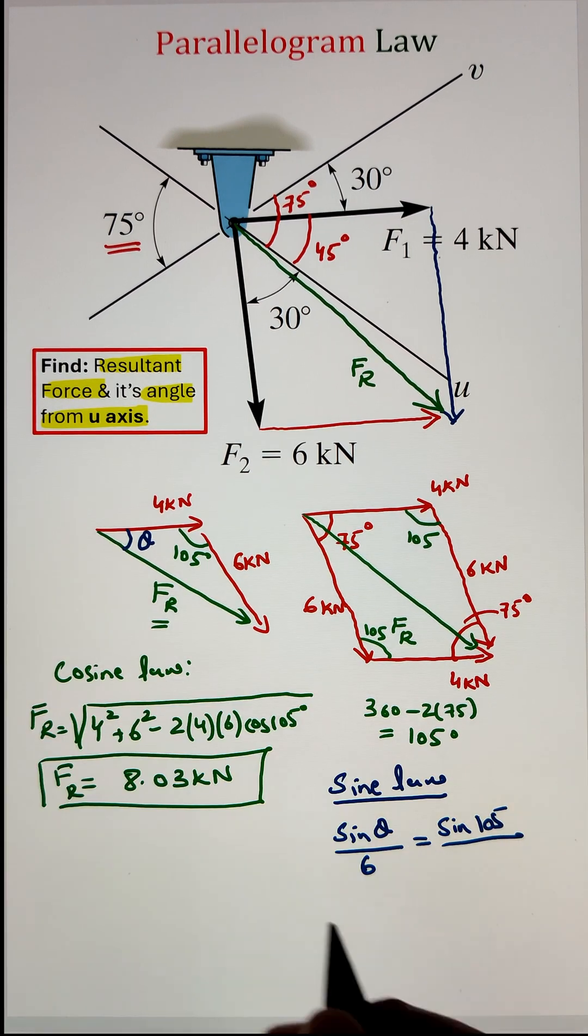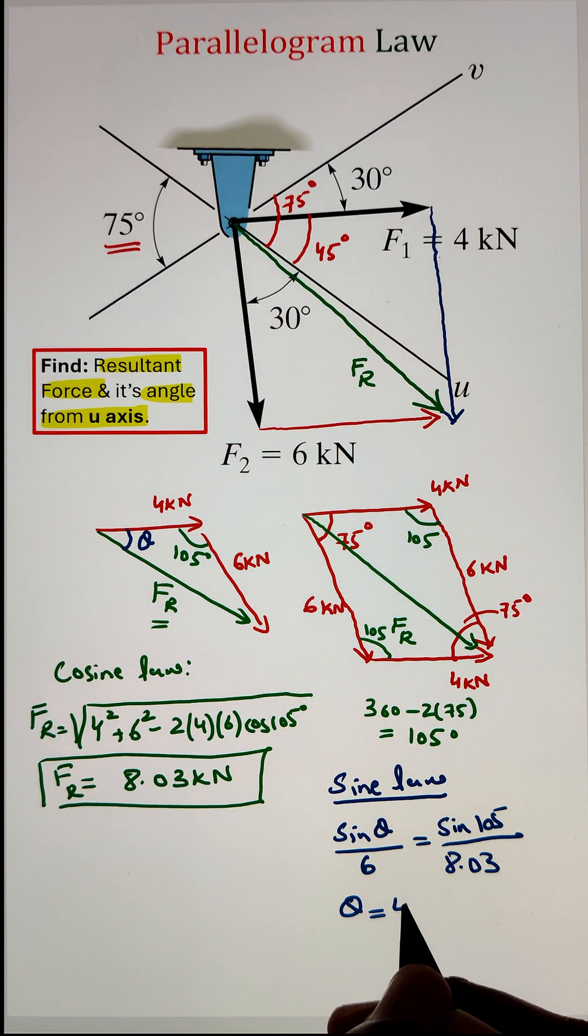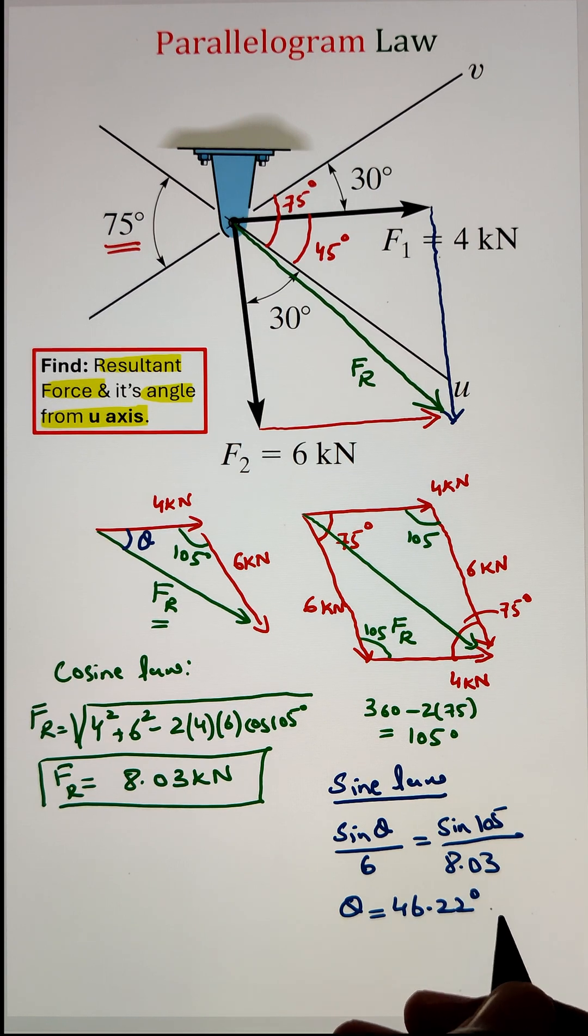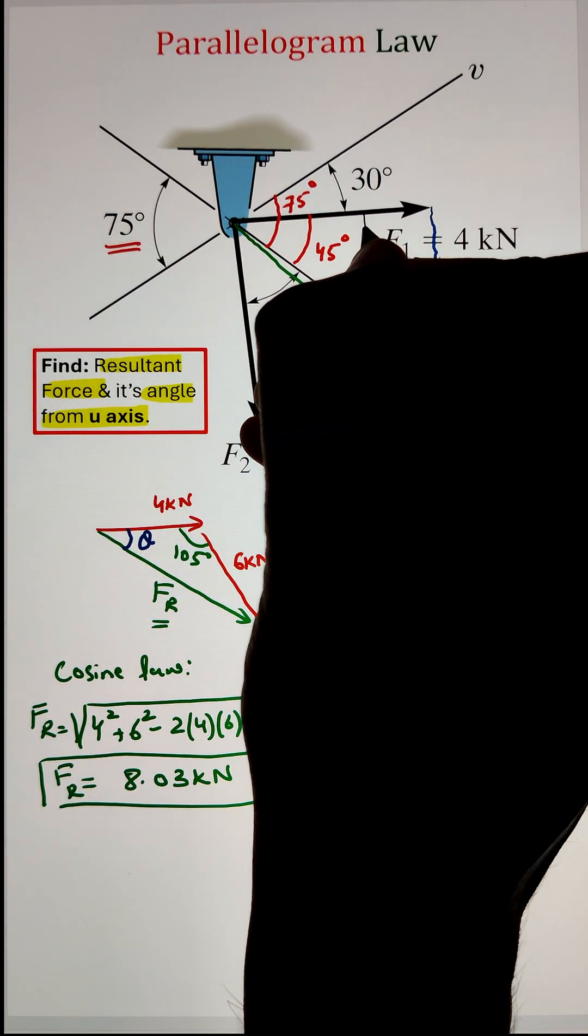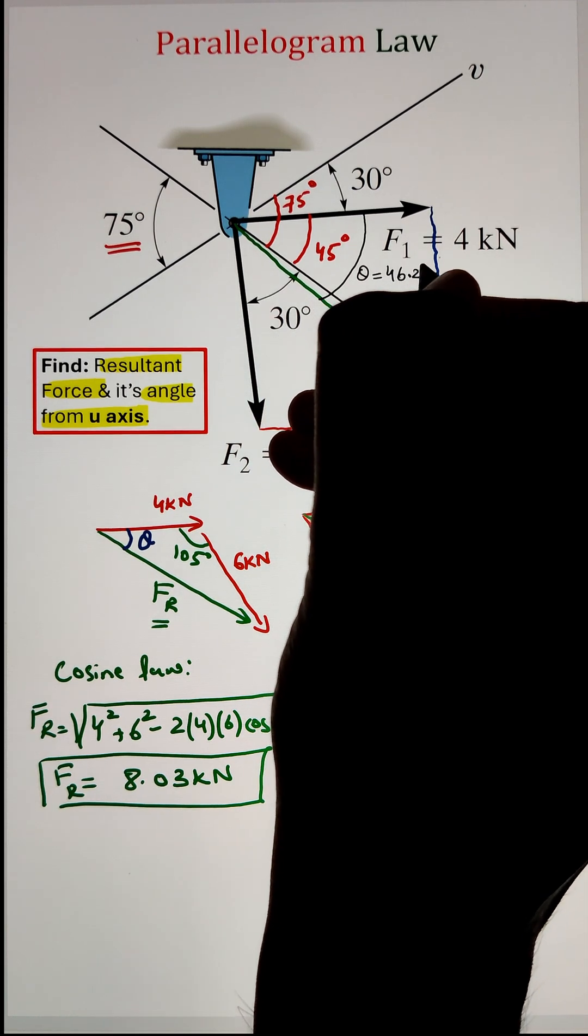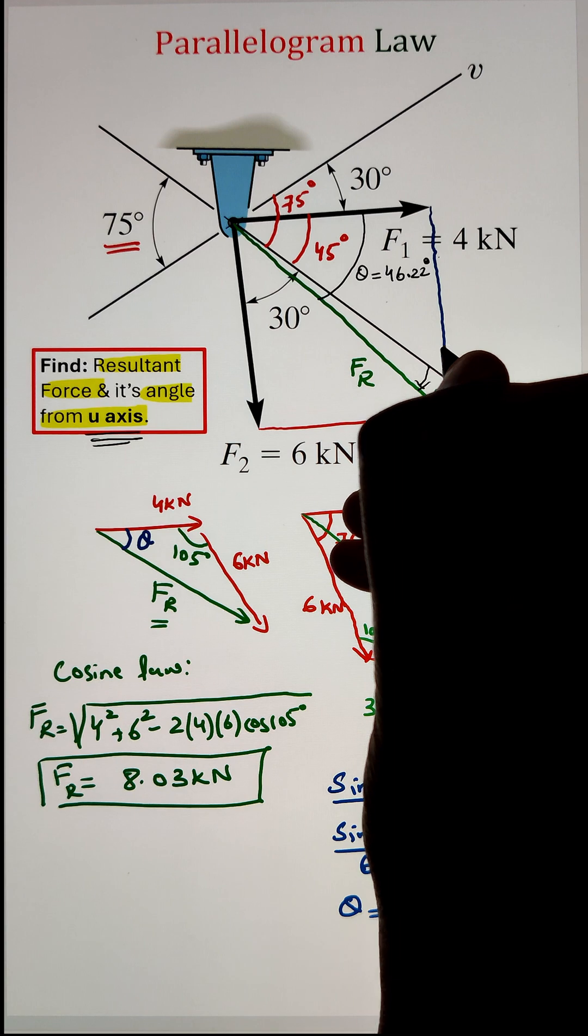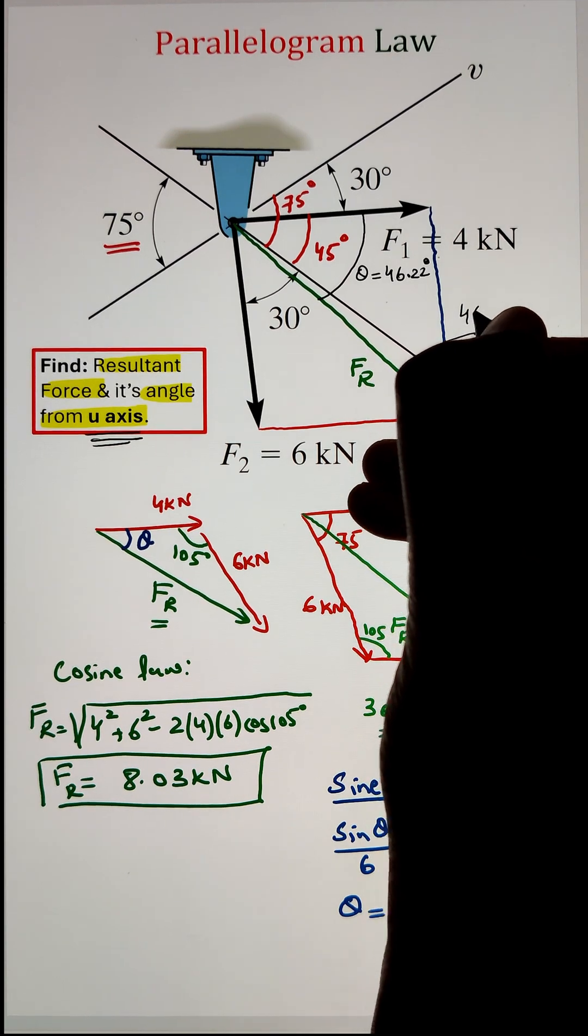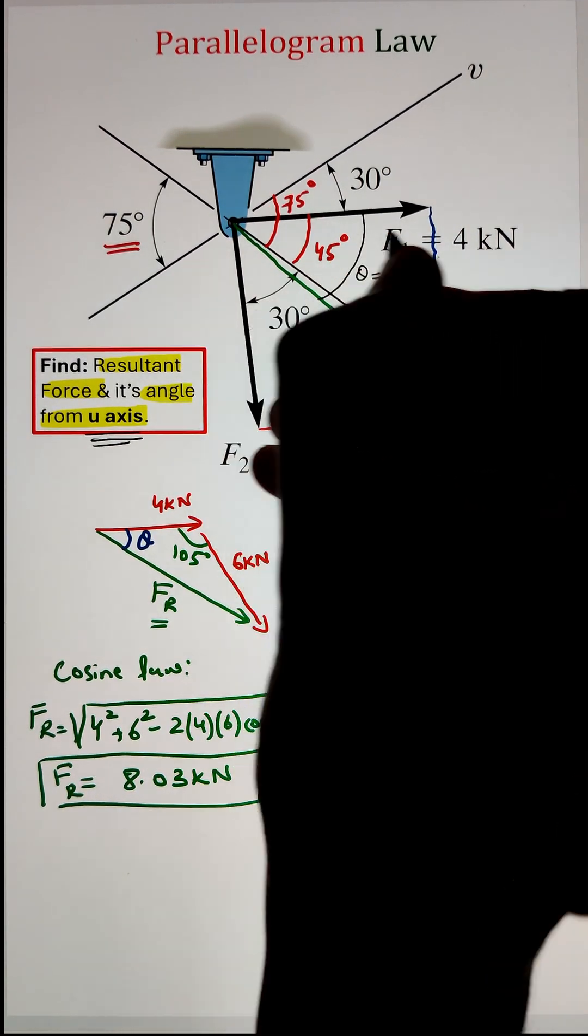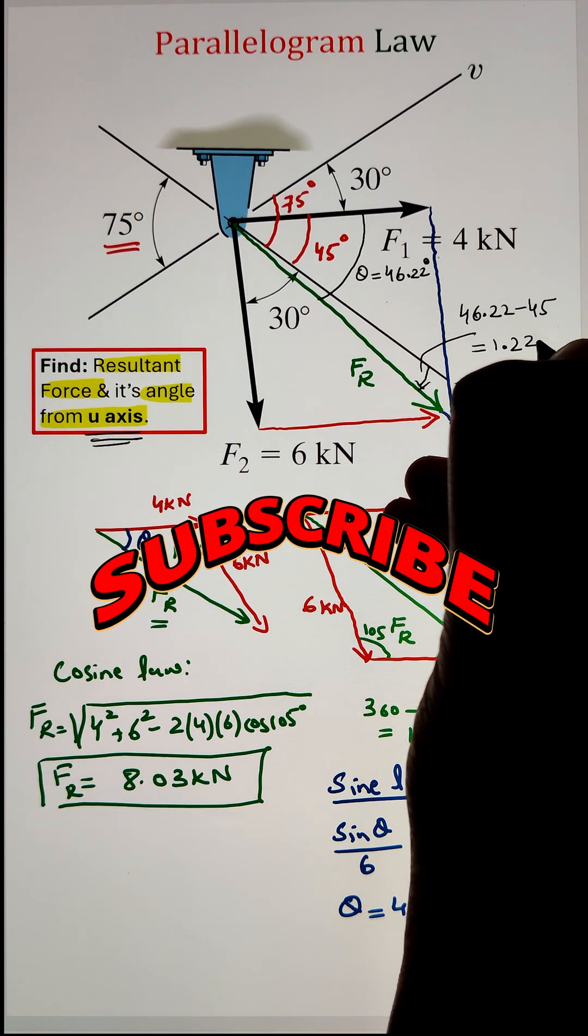Since it is an angle between the force F1 and FR, however, we are looking for the angle of resultant force from the positive u axis and the angle between the force F1 and the positive u axis is 45 degrees. We can simplify and identify the angle from the positive u axis to the FR force by subtracting 45 degrees from 46.22. That gives us the final value of 1.22 degrees.